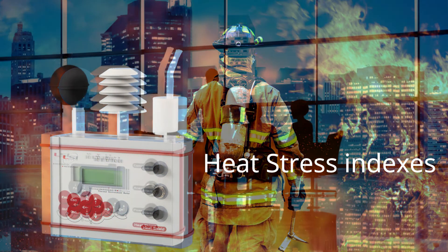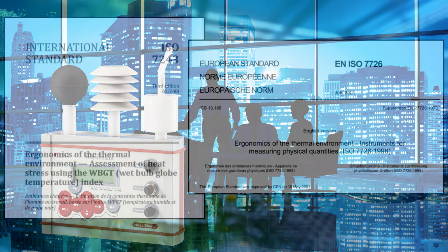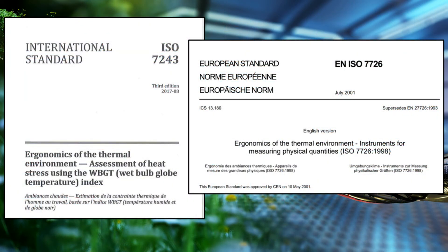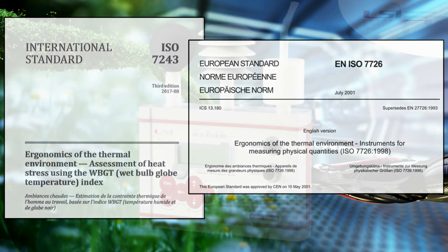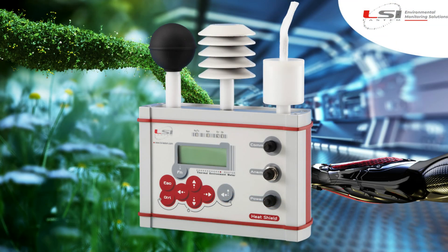Heat Shield has been designed 100% in compliance with the ISO 7243 and ISO 7726 standards for both comfort and stress classes measuring instruments. The Heat Shield unit uses its built-in sensors to measure and display the following parameters.